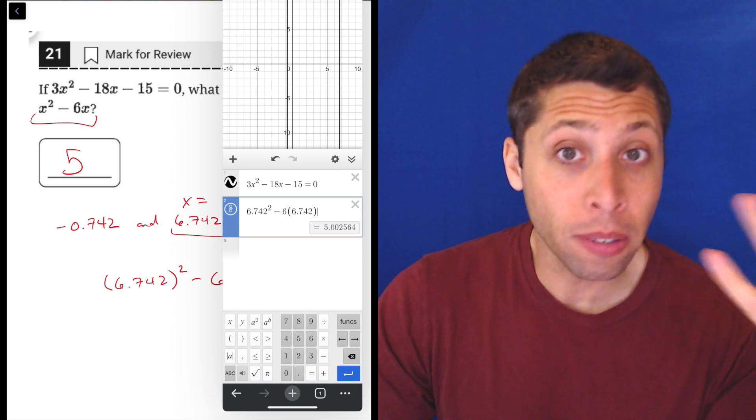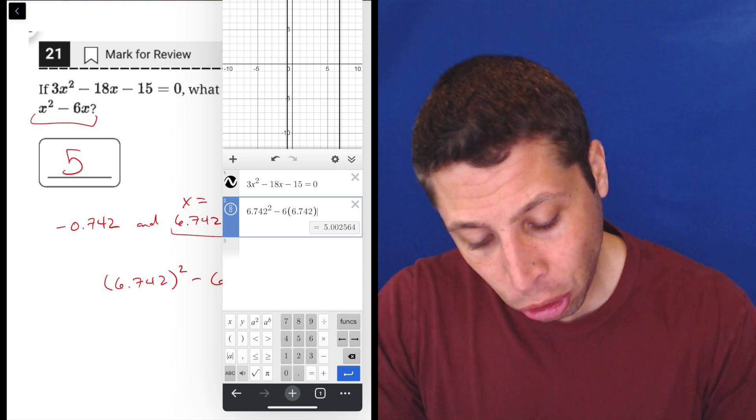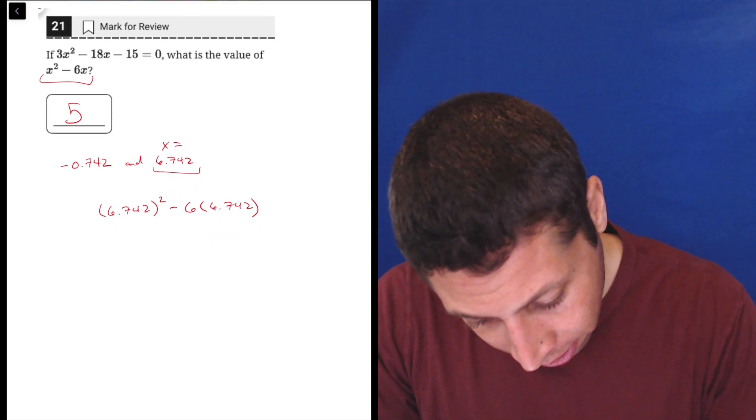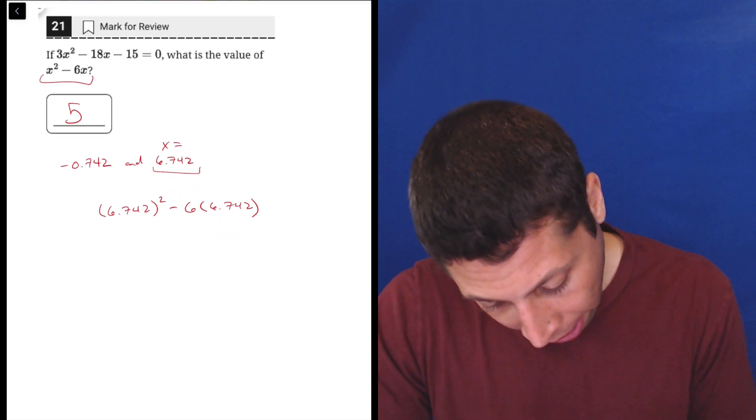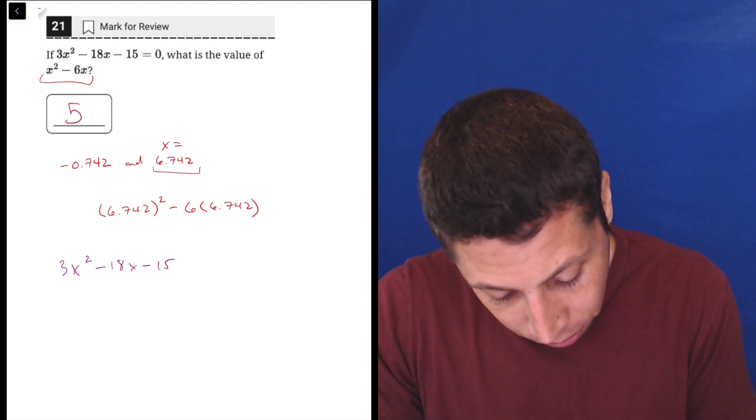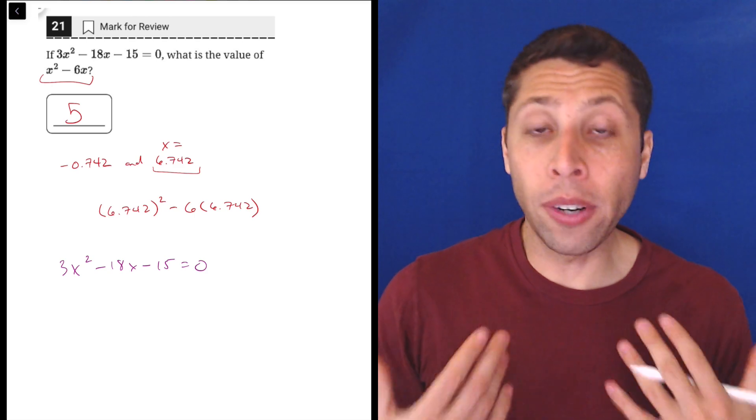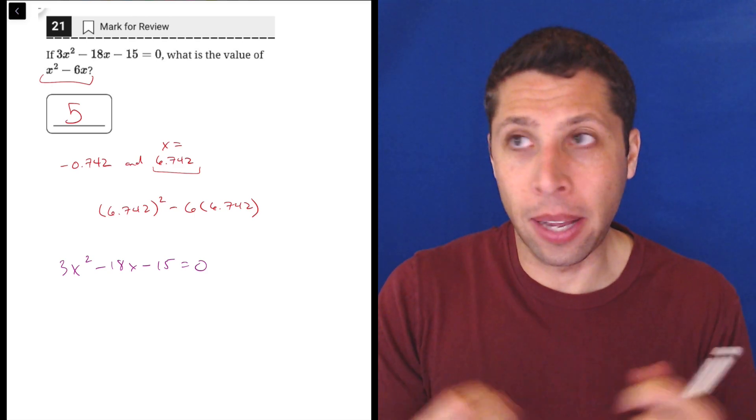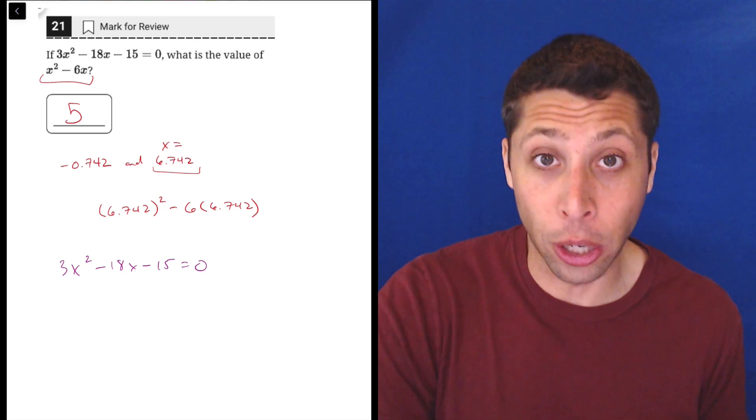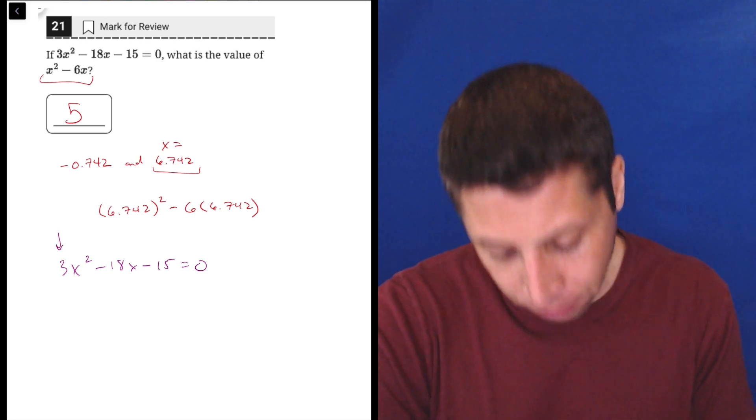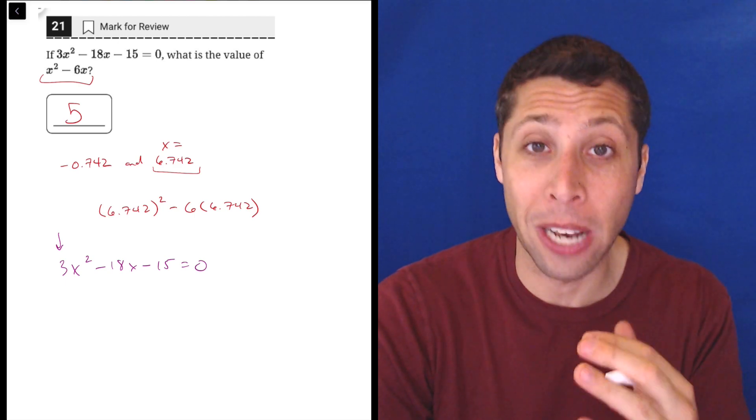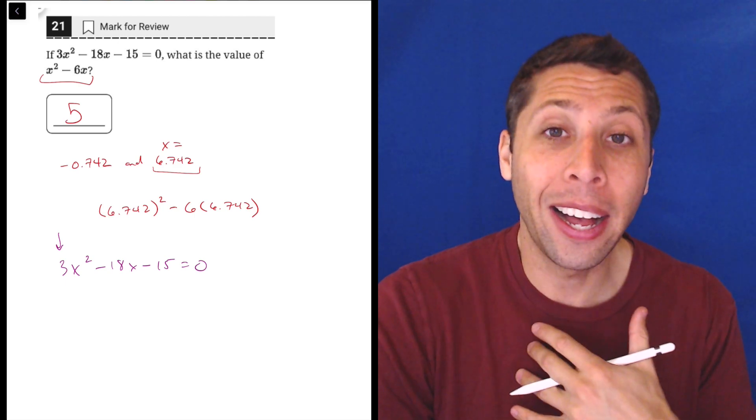But if you do know how to do the algebra it's maybe a little bit more certain and a little less guesswork. So let me show you how this would work if I were doing this. I would say okay 3x² - 18x - 15 = 0. So this already has one part of a quadratic that is easy to work with, it's equal to zero, that's kind of good. But I don't love that there's a number in front of the x².